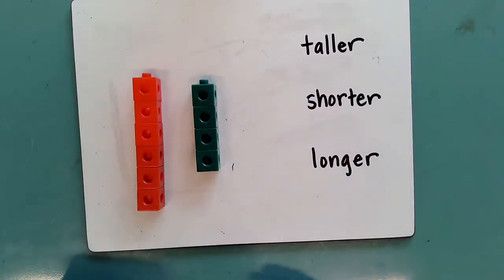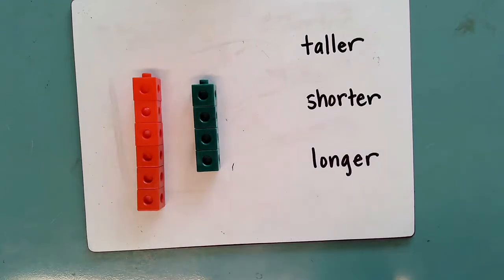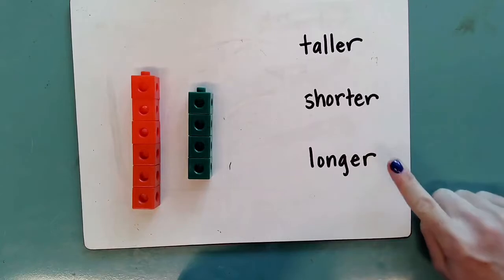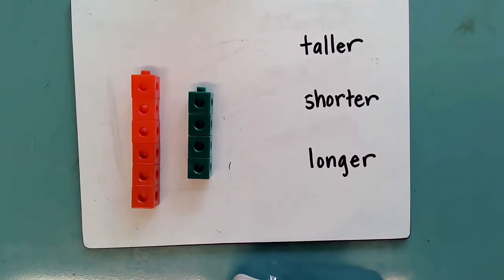Today for our math strategies video, we're going to be comparing lengths. We're going to be sorting some objects here as taller, shorter, or longer. So let's go ahead and get started.